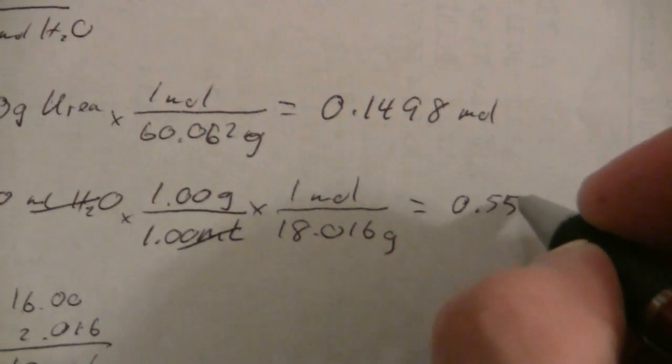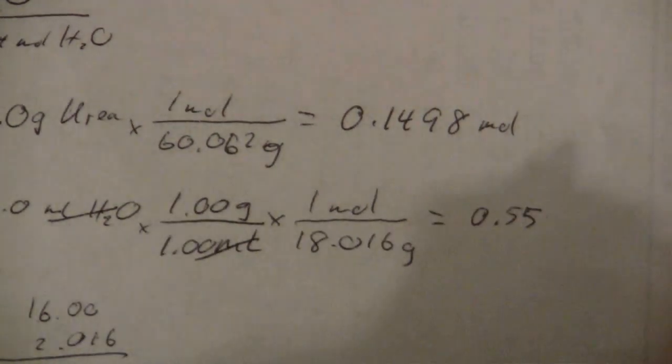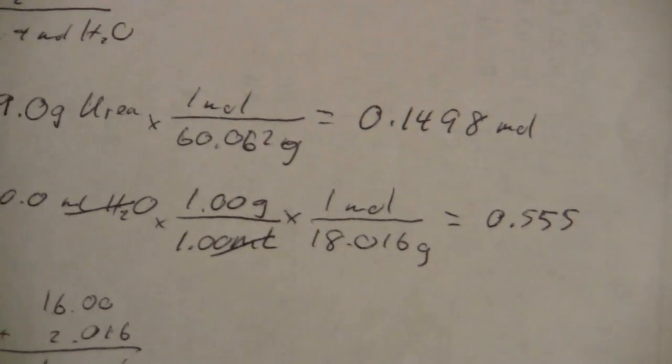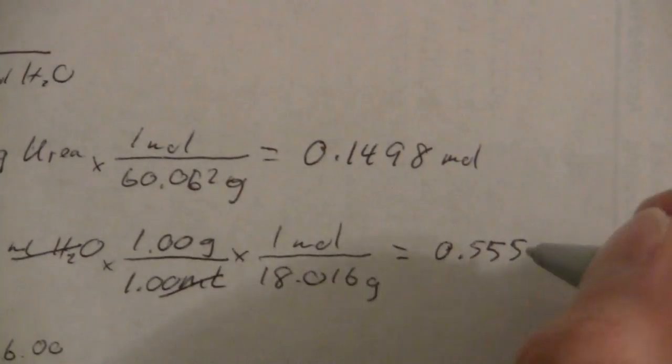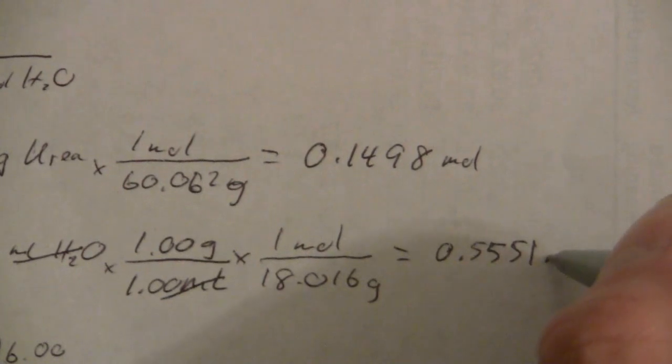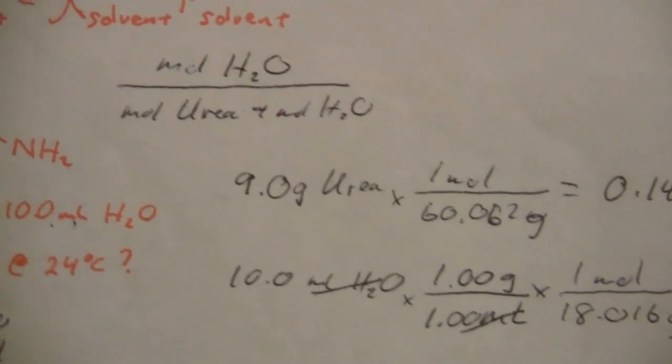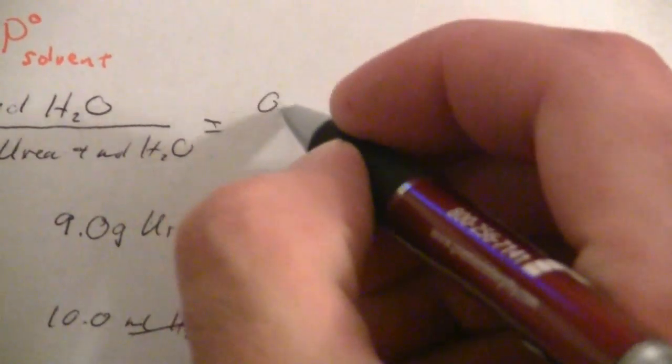Actually, it's about 0.555, or more precisely 0.5551. So here we have moles of water and moles of urea, and we can find the mole fraction.